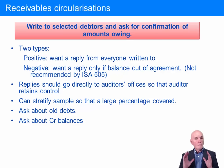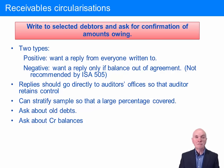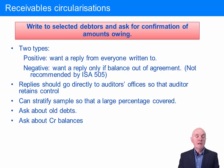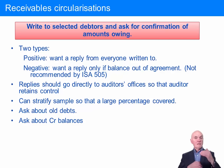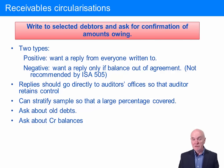It is really universal practice to carry out what is called a receivables or debtors circularization. This is where you write to customers — debtors — asking them to confirm what they owe to your client. It will tend to be done on a sample basis, and very often we'll use stratification. We may write to the 10 very biggest customers with the biggest balances, maybe 50% of the medium-sized balances, and then maybe 50 out of several hundred of the small balances — so we cover by value a good proportion of the total receivables balance.